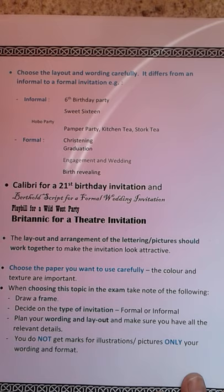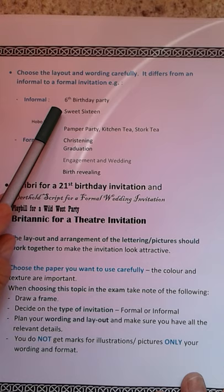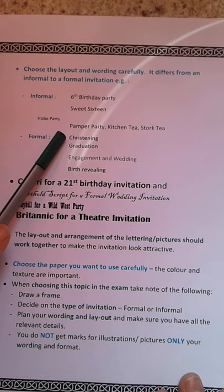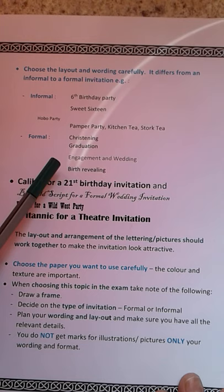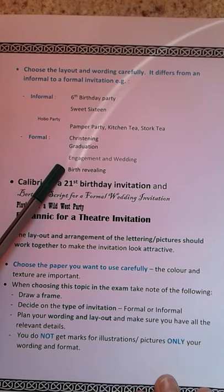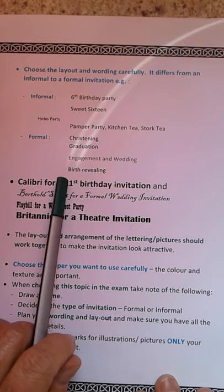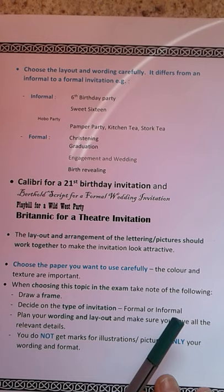Choose the layout and wording carefully, as that can differ between informal and formal invitations. An informal invitation would be for a 16th birthday party, a sweet 16, a hobo party, a pamper party, or kitchen tea. A formal event is a christening, graduation, engagement, or wedding party. When choosing your font if you type it, Calibri might suit a 21st birthday invitation, Bertolt Script which is more curvy for a wedding invitation, Playbill for a Wild West party, and Britannic for a theatre invitation.